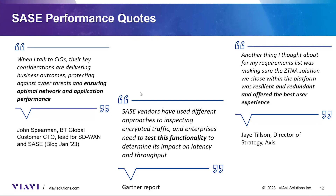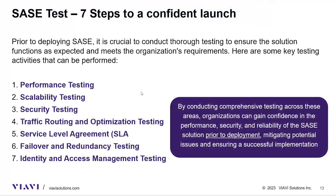This brings us to seven steps to a confident SASE launch. Prior to deploying SASE, it's crucial to conduct thorough testing to ensure the solution functions as expected and meets the organization's requirements. Step one is performance testing: assess the SASE solution's performance under different network conditions, measuring metrics such as throughput, latency, jitter, and packet loss to ensure they meet performance requirements. Test the solution with varying traffic loads using simulated traffic scenarios in a lab.